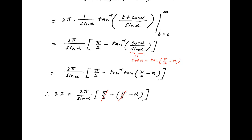The factor of 2 cancels on both sides, and therefore the value of i is equal to πα / sin α, which is the required answer.